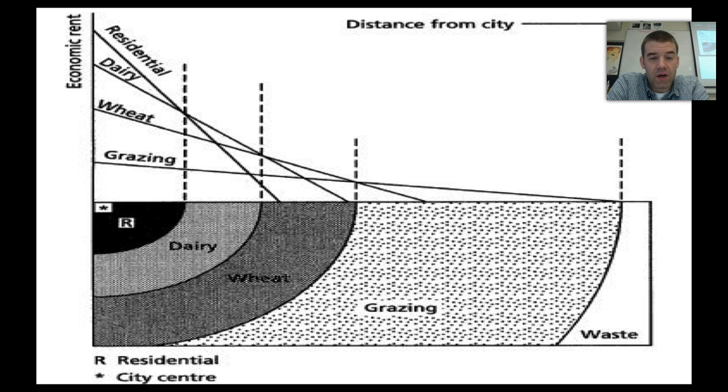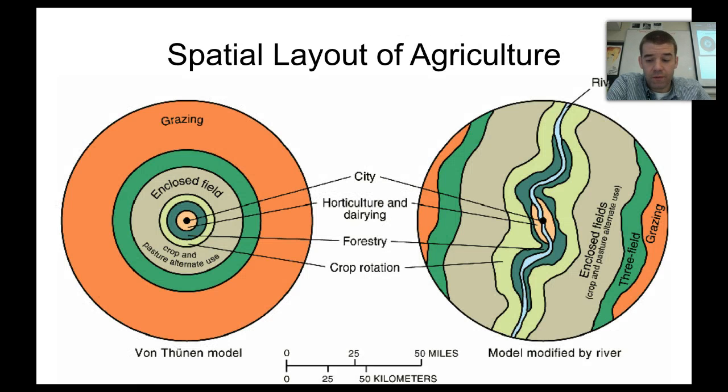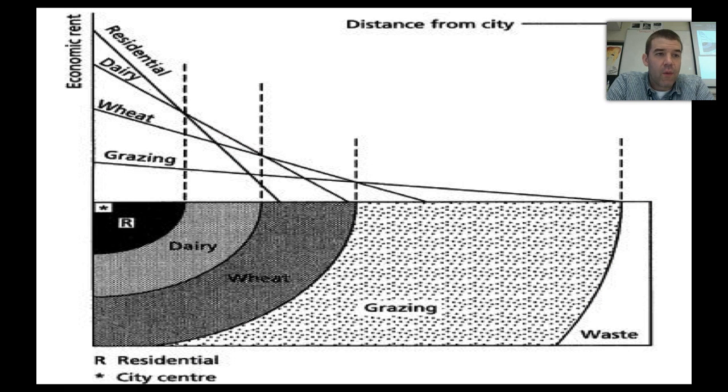Looking at this you can see partial concentric rings and the star representing our city center. We can see on the y-axis is the economic rent or the cost of the land as you move away from the city center. Being wanting to be near it, you see residential has the steepest curve because people want to live nearby the city where those markets are, but it's going to cost the most.